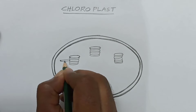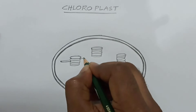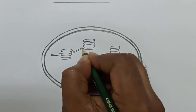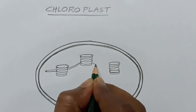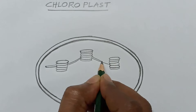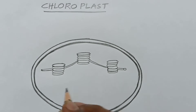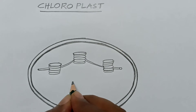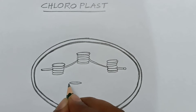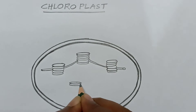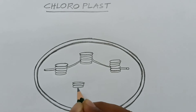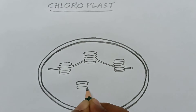Now you have to draw lines like this from one grana thylakoid to another bunch. These are the stroma lamella, which connects the grana thylakoids.